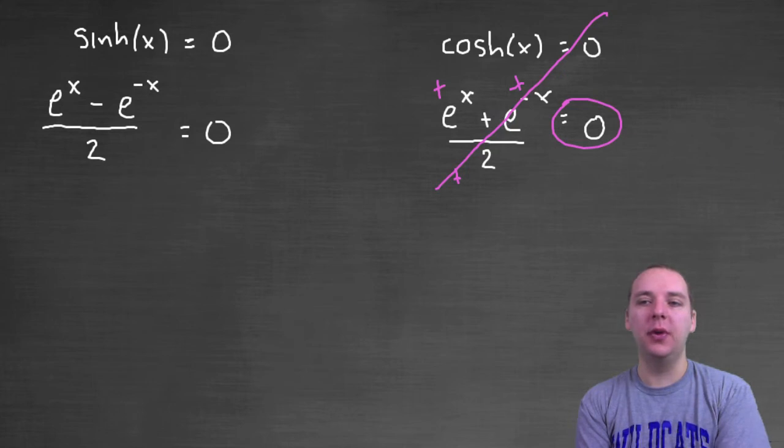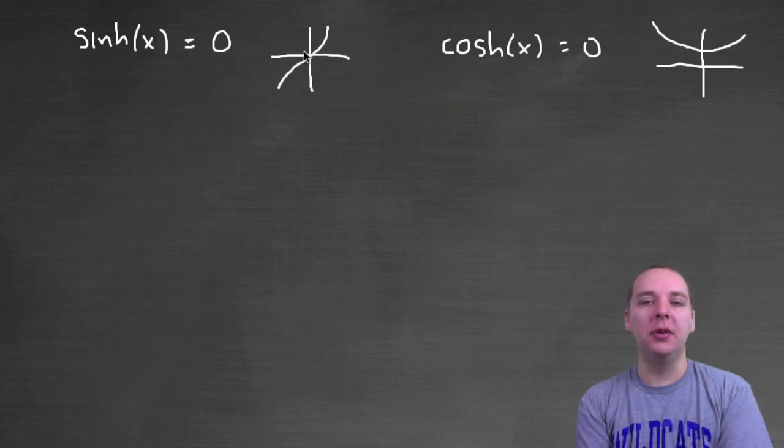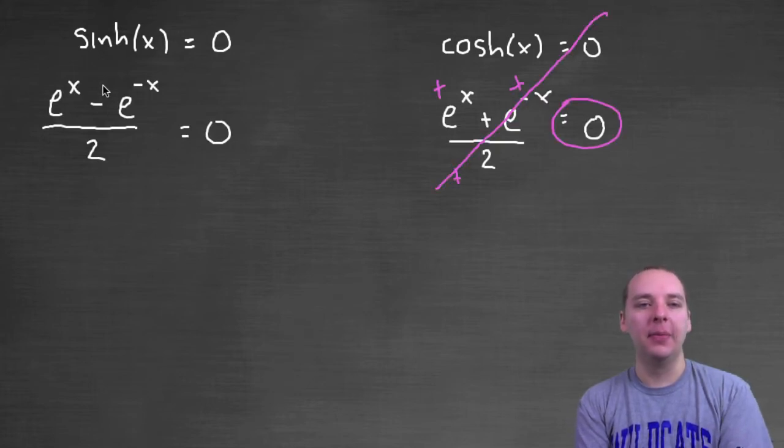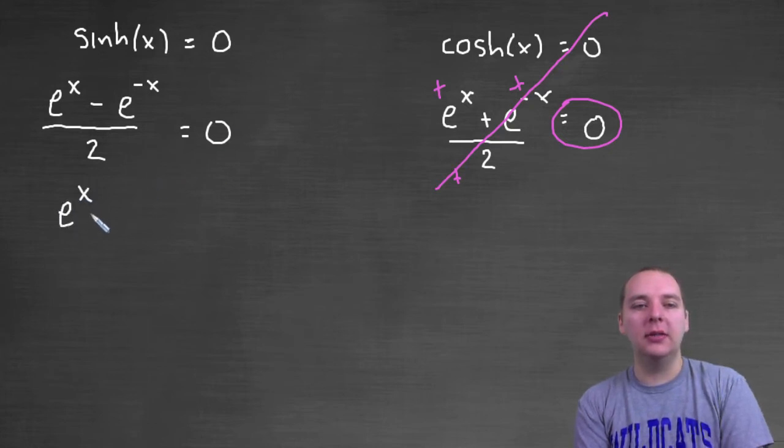However this one will. Let's pretend we don't know the answer and do it algebraically. We could move the two to the other side, multiply both sides by two, and we'd have e to the x minus e to the negative x equals zero.